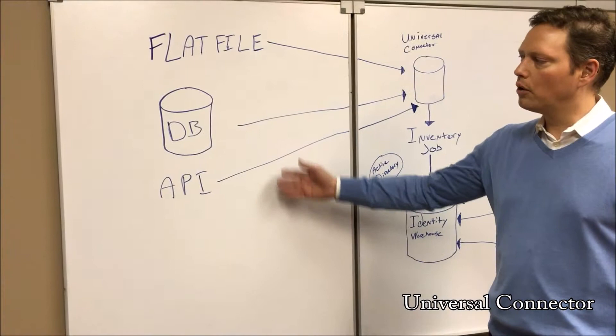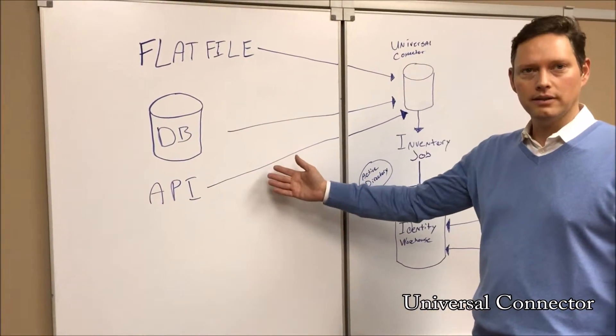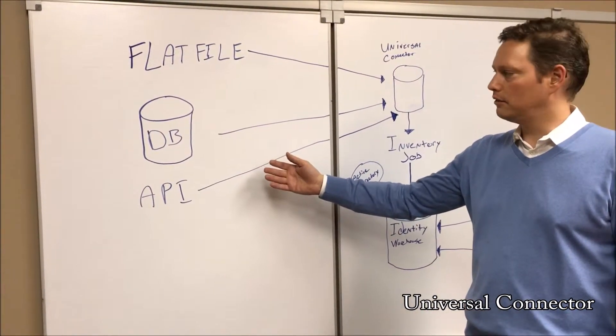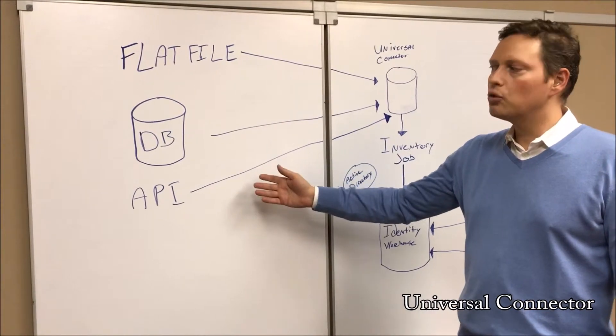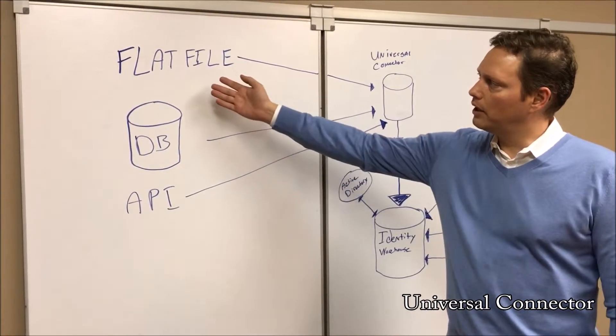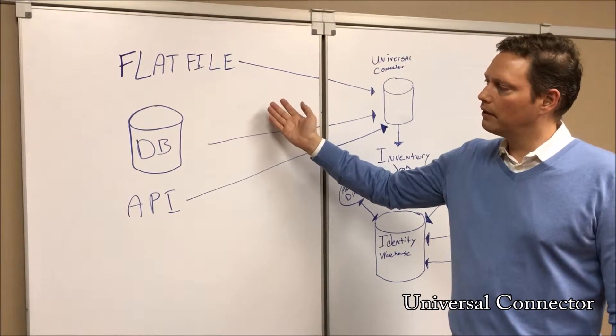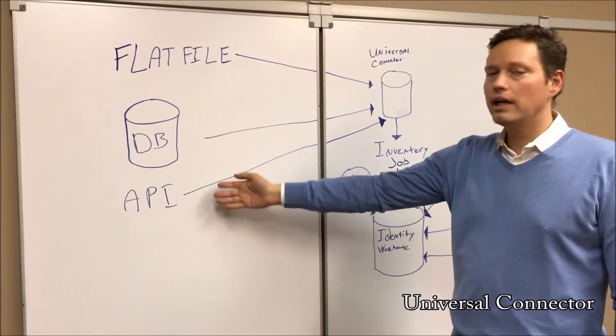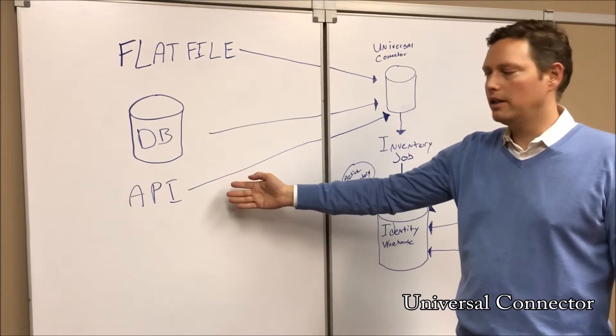Now there are other systems that organizations have. The bulk of their systems are often custom systems or less well-known systems for which an existing connector would not exist from any vendor. So those systems offer the ability to have a flat file feed dumped out, access to the data in the database, or even an API in some cases, which makes it even easier.